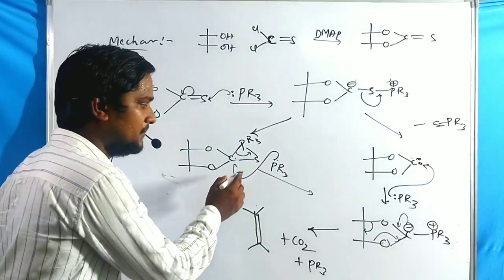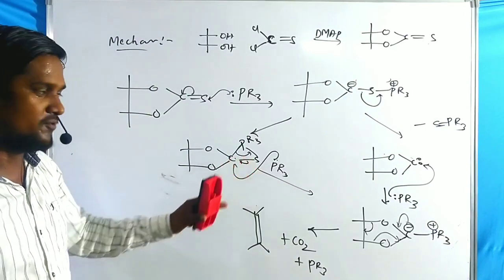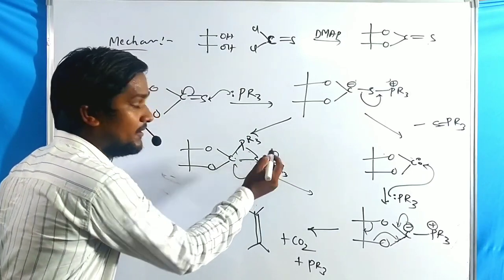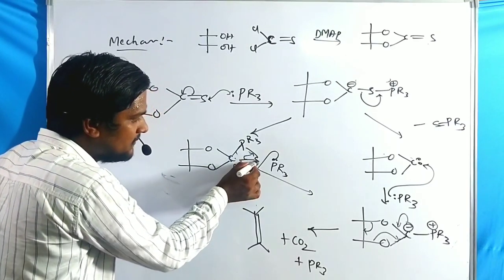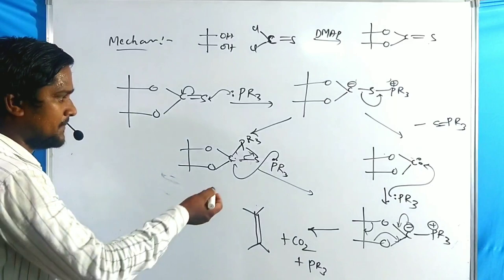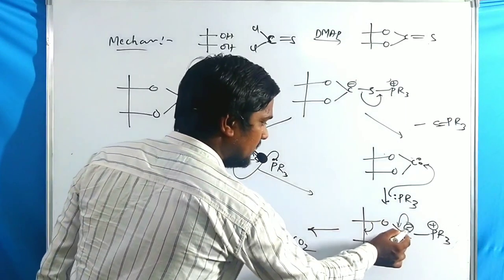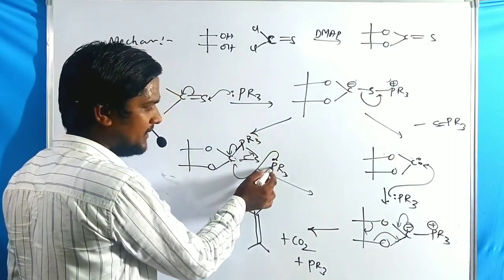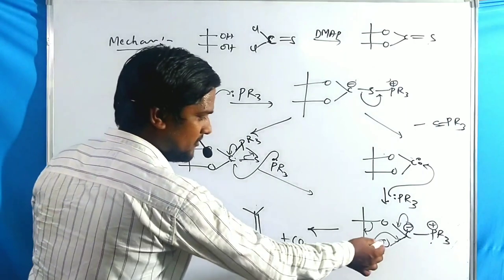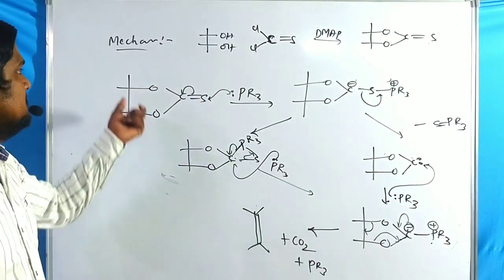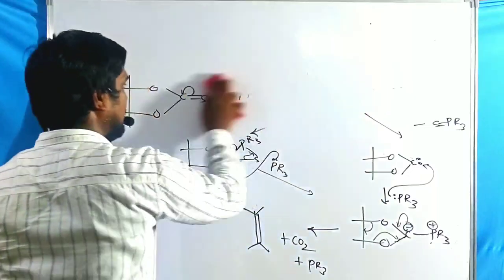To summarize the mechanism more simply: the lone pair of phosphorus attacks the carbon center, so the pi-bonded electrons shift to phosphorus forming a single bond that becomes a double bond. Phosphorus loses electrons toward the carbon, making it C-minus, which is then eliminated with PR3 as the incoming group. This is the simplest mechanism of Corey-Winter fragmentation.